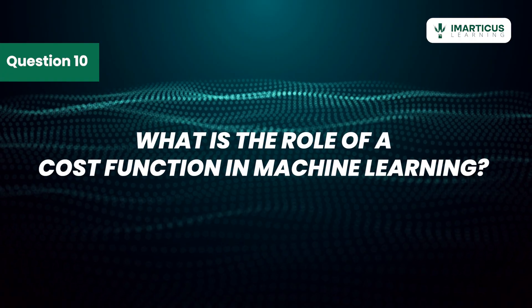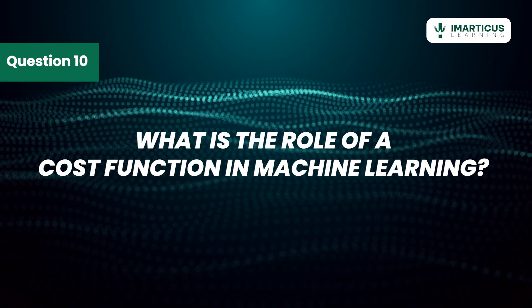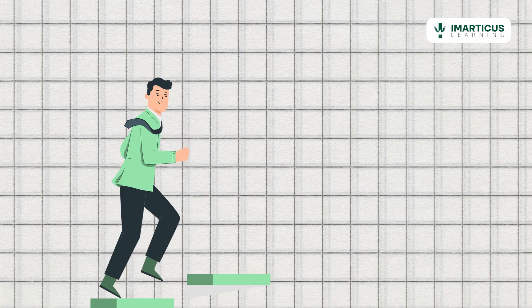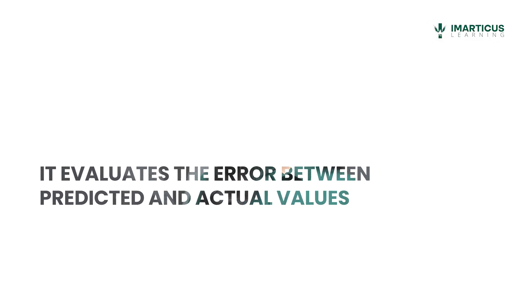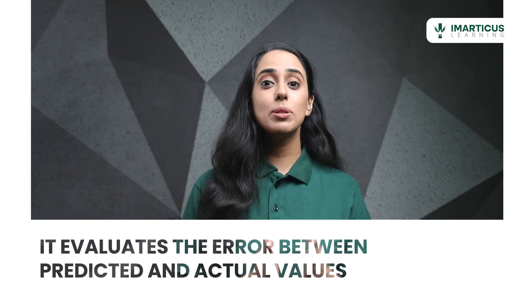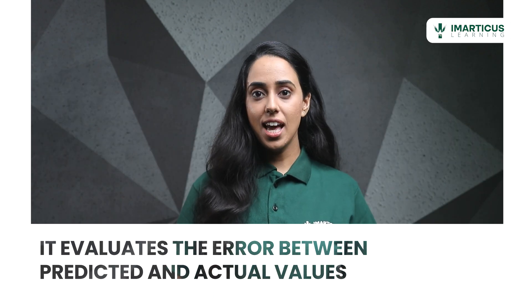What is the role of a cost function in machine learning? A cost function is like your personal trainer in the gym, measuring how far you are from your goal. It evaluates the error between predicted and actual values, and the aim is to minimize the cost to boost your model's accuracy.